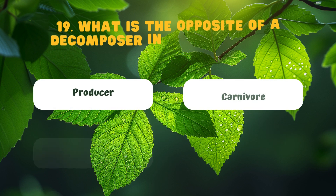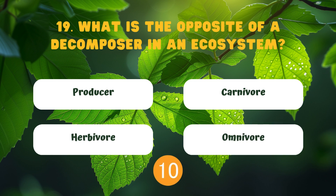What is the opposite of a decomposer in an ecosystem? Producer. Carnivore. Herbivore. Omnivore.